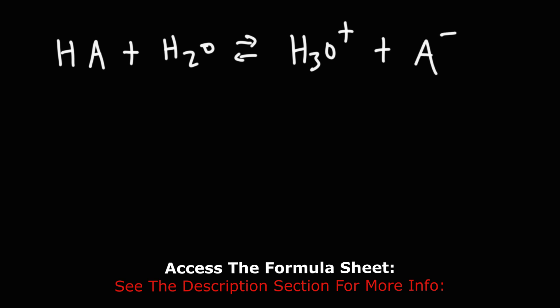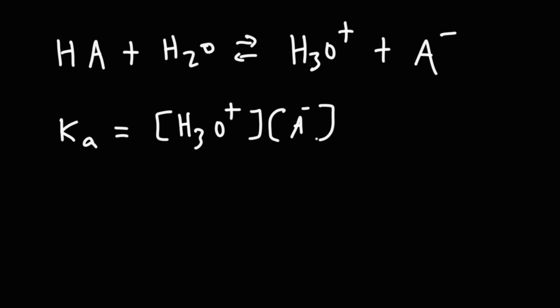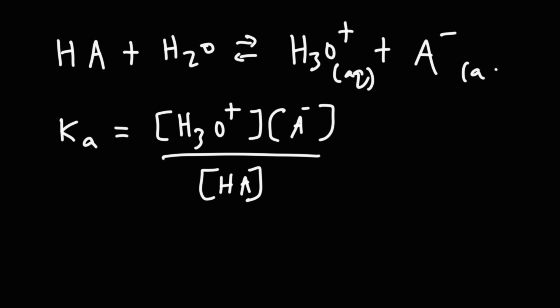Water acquires that proton and turns into H₃O⁺, and we get the conjugate base A⁻. The acid dissociation constant Ka equals the concentration of the products divided by the reactants — that's [H₃O⁺][A⁻] divided by [HA]. Note that HA is in the aqueous phase; water is a liquid, and we don't include solids or liquids in the equilibrium expression.